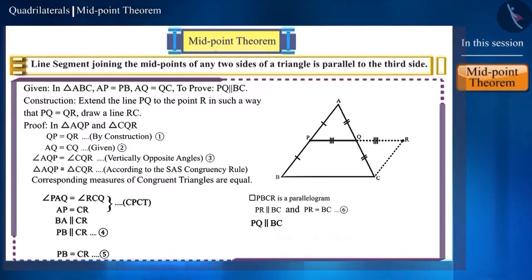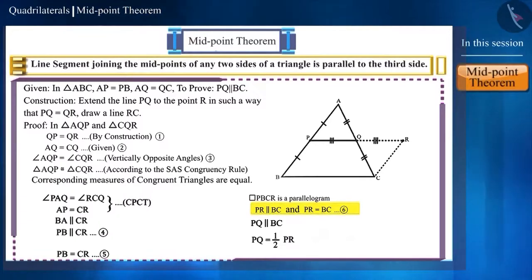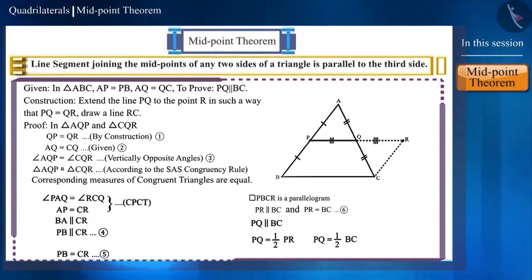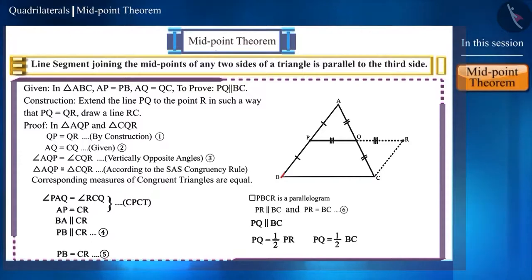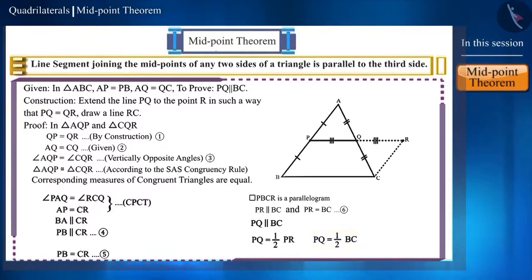Friends, we know that PQ and QR are equal, so PQ equals half of PR. And from equation 6, PR and BC are also equal. If we write BC in place of PR, we get side PQ as half of side BC. The point to note here is that the length of the line segment formed by joining the midpoints of the two sides is always half the length of the third side.